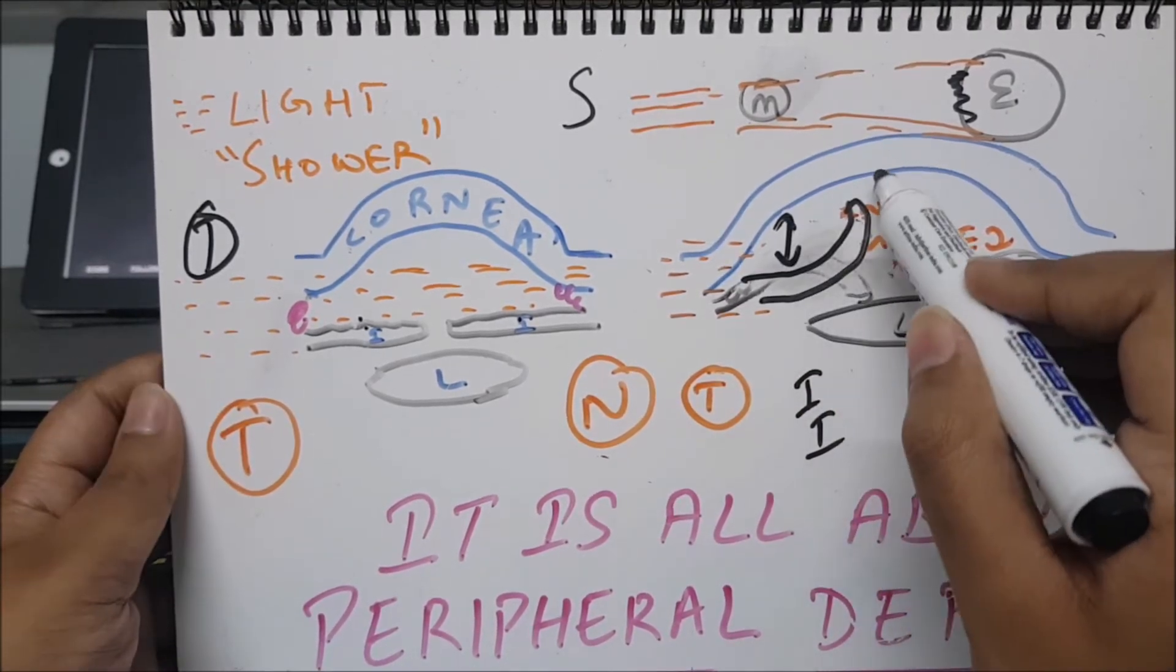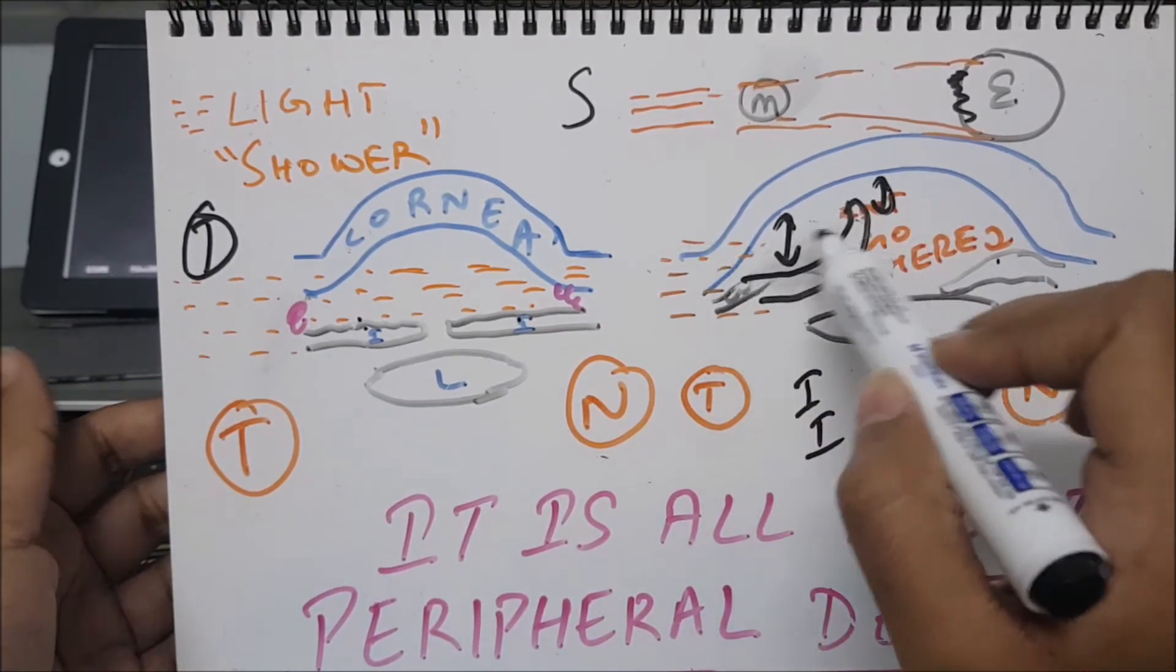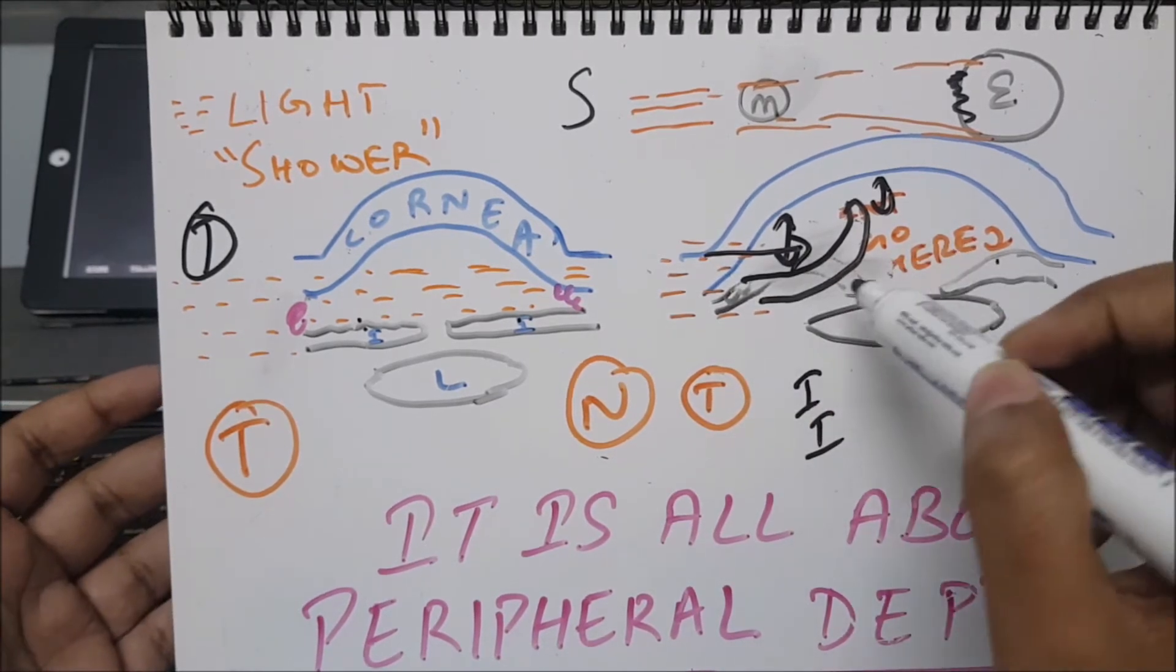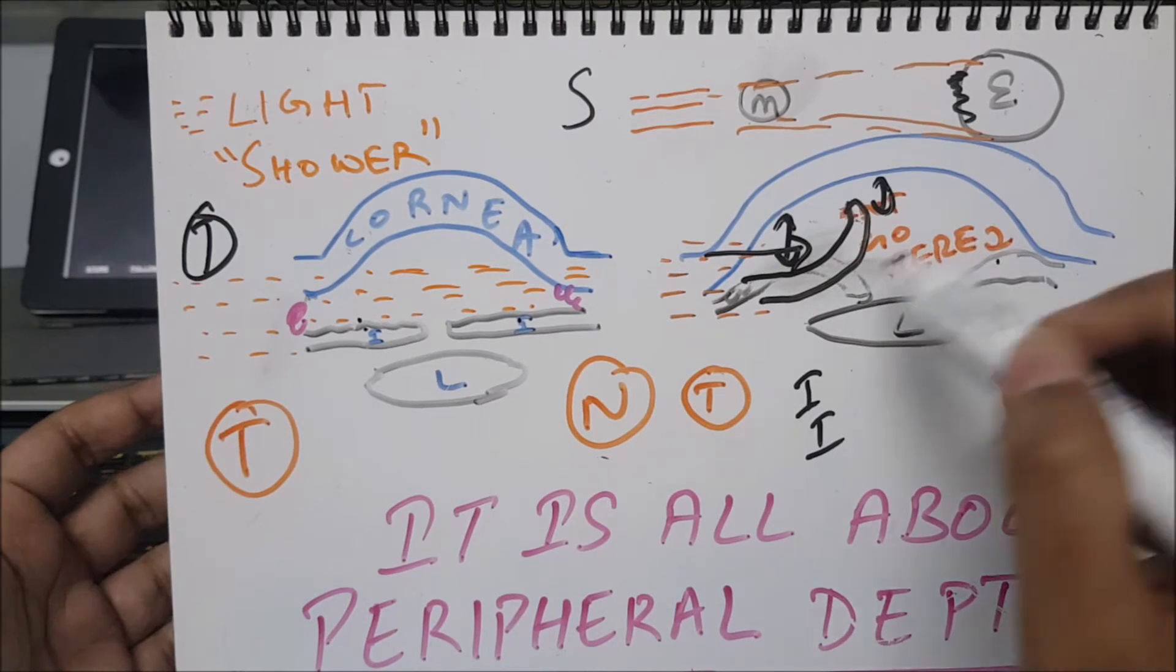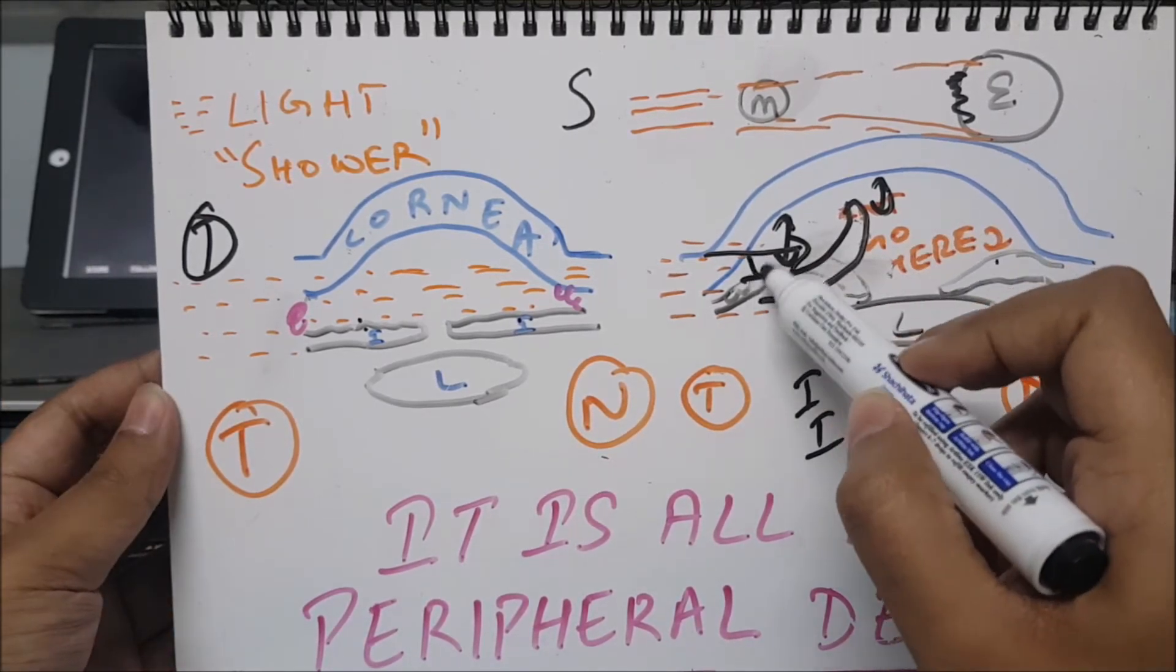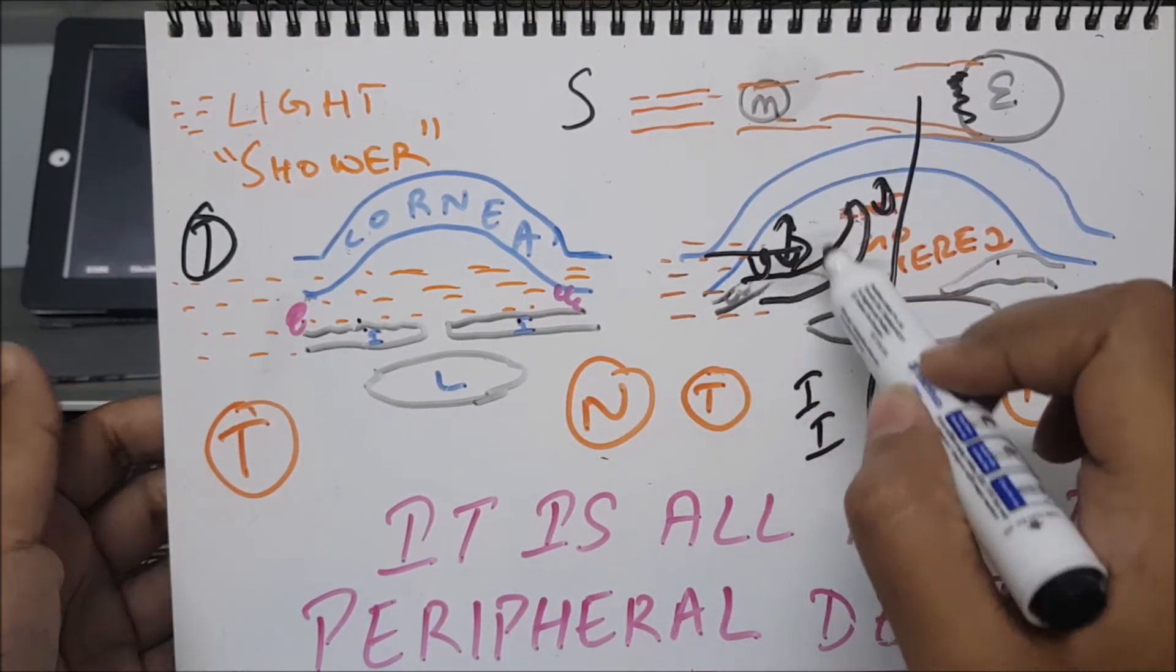For example, in posterior iridocyclitis, the peripheral depth may be increased but the central depth decreased. It's all about the depth. But here also, if you throw light, there would be no light here, so again we see eclipse sign.